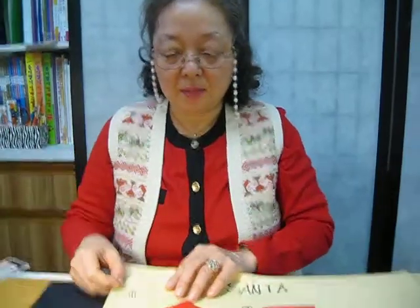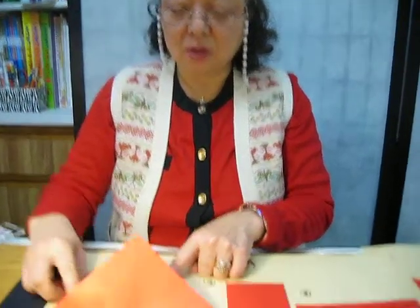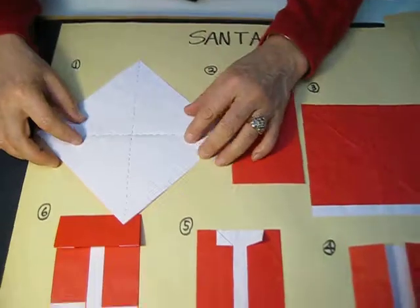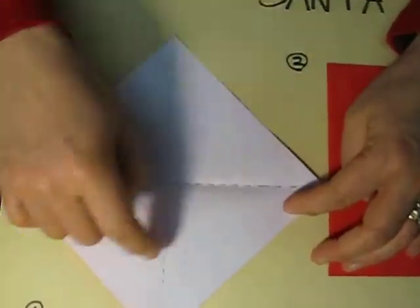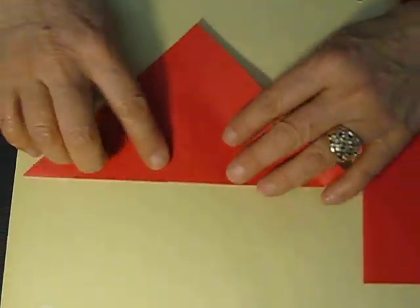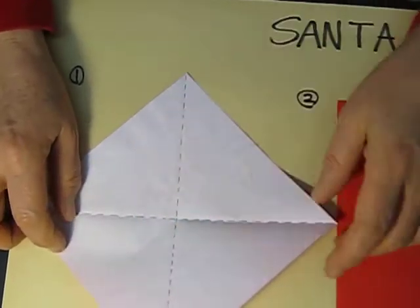We need to make the Santa's body. I already made these directions. First step, fold the triangle. Fold one triangle, second triangle. Fold one side and the other side. Make the triangle line.